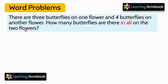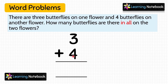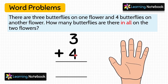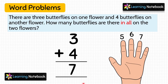Let's understand the next word problem. It is given that there are 3 butterflies on the 1st flower and 4 butterflies on the 2nd flower, and we have to find the total number of butterflies on both flowers. So again we have to do addition. Let's add 3 and 4. The bigger number is 4, so keep 4 in your mind and count 3 fingers: 5, 6, 7. So 3 plus 4 equals 7. There are 7 butterflies on these 2 flowers.